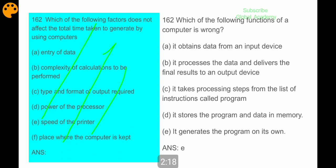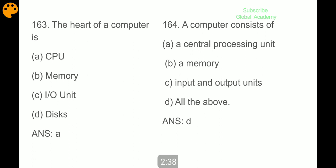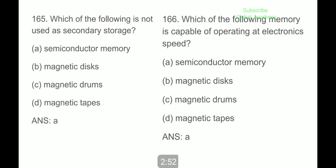Next question: which of the following functions of a computer is wrong? The heart of the computer is the CPU, central processing unit. A computer consists of central processing unit, memory, input and output units, all of the above.